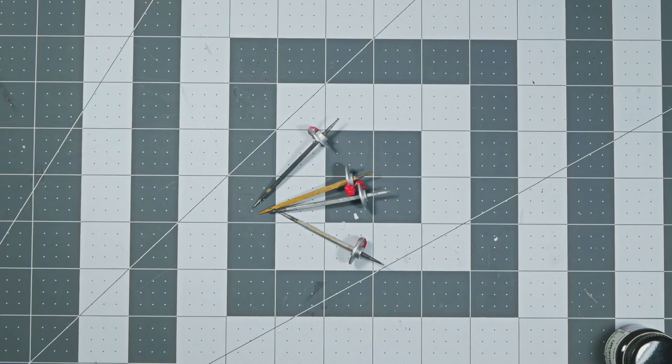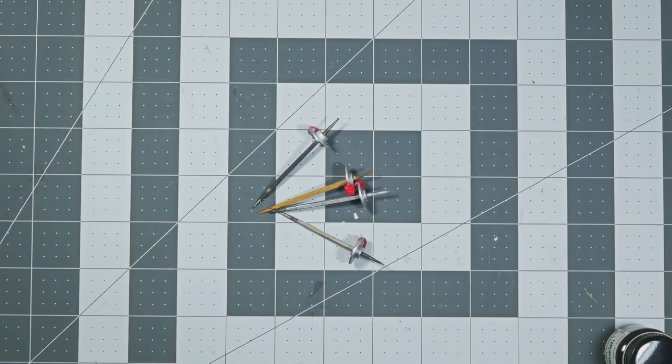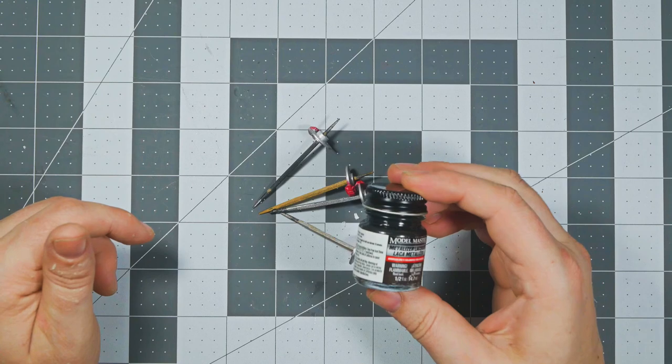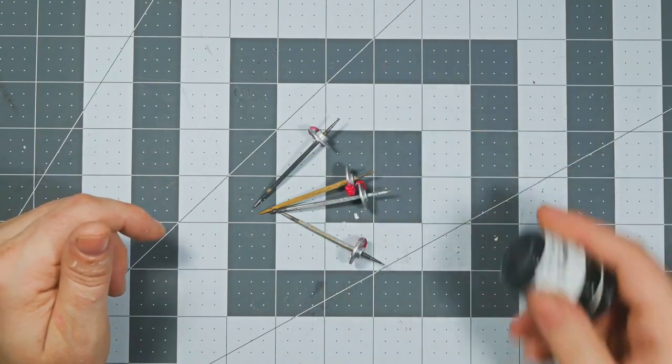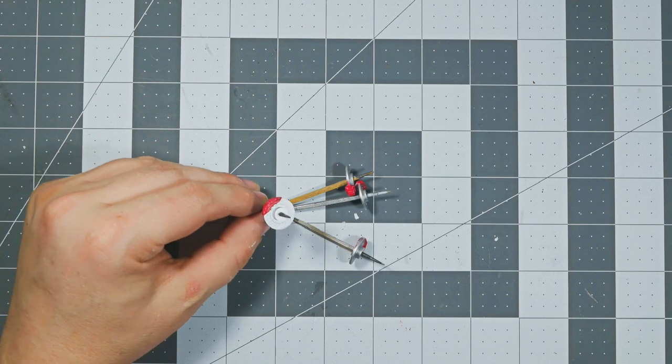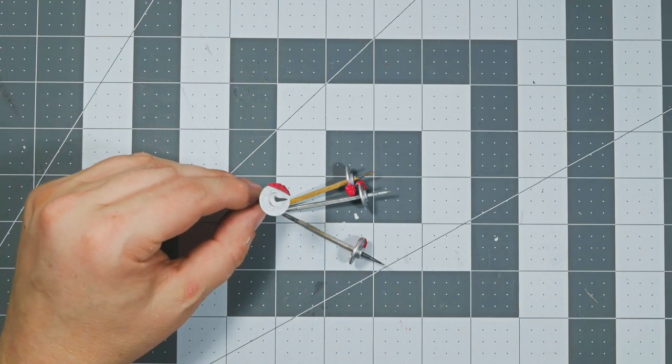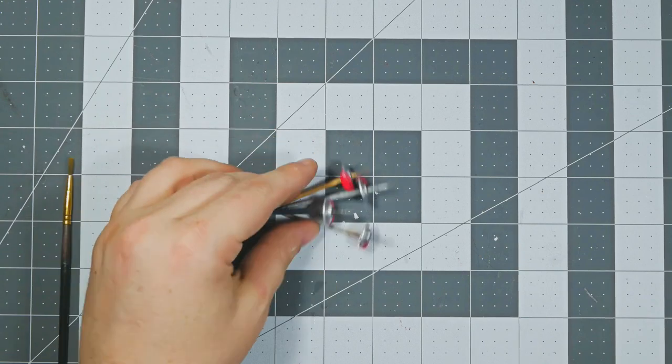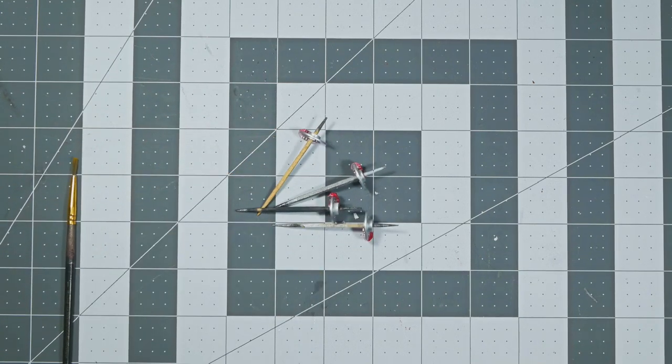I'll be using Model Masters exhaust for the center section. It says to use semi-gloss black, but I'm going to go ahead and use a metalizer just to be different.